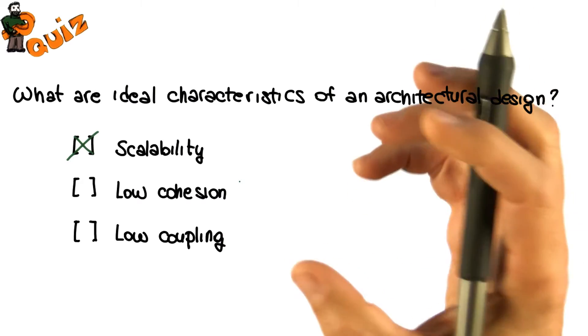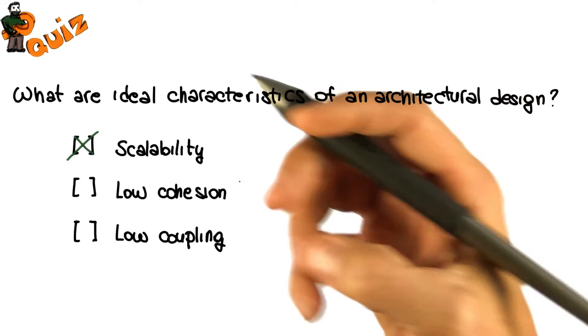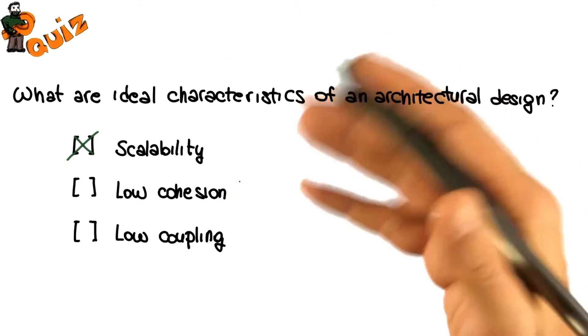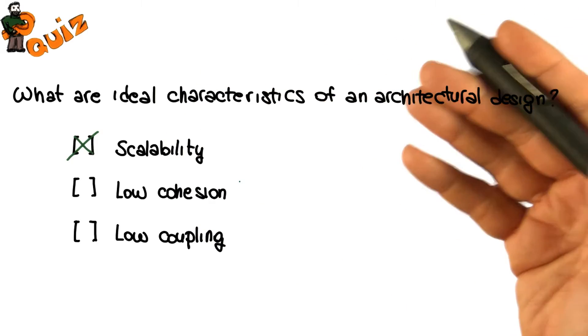Cohesion is a measure of how strongly related the elements of a module are. Clearly, we should shoot for high and not low cohesion when developing a system.